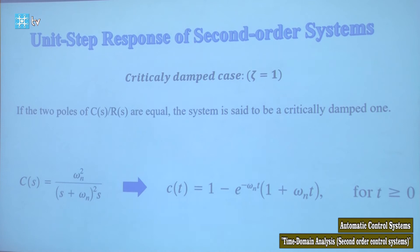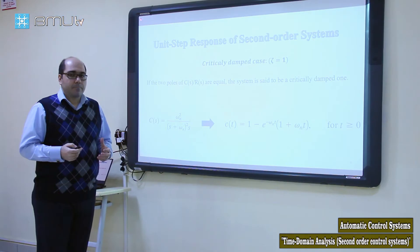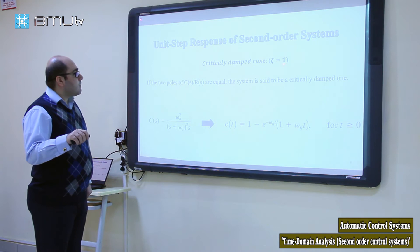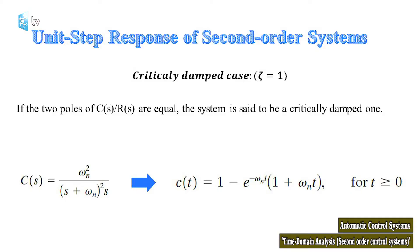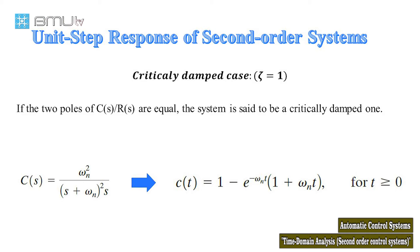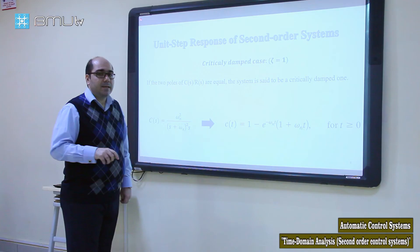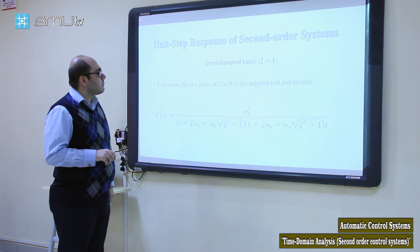If zeta = 1, substituting this into the output equation gives us the C(s) expression. Taking the inverse Laplace transform, we find the system response — and this is the critically damped case.